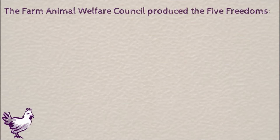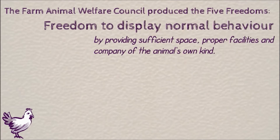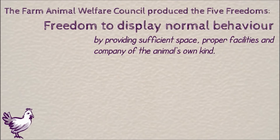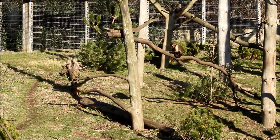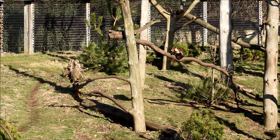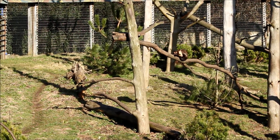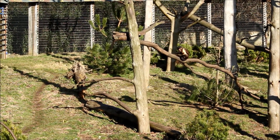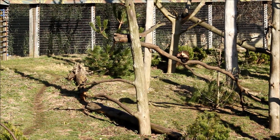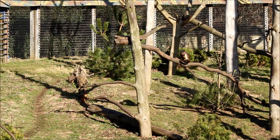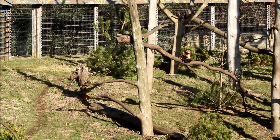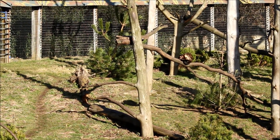And finally, the freedom to display normal behaviour ensures that animals can fulfil their behavioural repertoire, and this includes being able to play, to forage, or to eat in a certain way. The freedom to display normal behaviour is a sign of positive animal welfare. Unlike the other freedoms, this is something that we can do to promote good animal welfare instead of just preventing bad animal welfare.